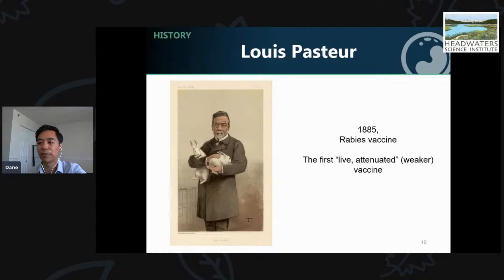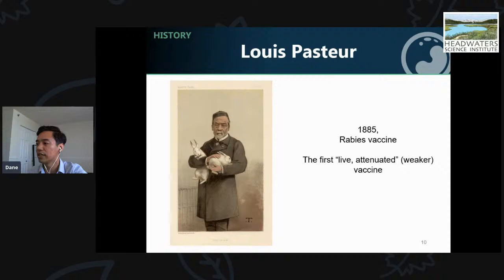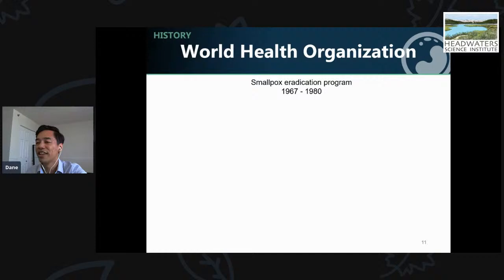In 1885, the second vaccine was created by Louis Pasteur against rabies — you might recognize his name from pasteurization of milk. He infected animals to weaken the virus, a 'live attenuated' approach. When nine-year-old Joseph Meister was brought to him after being bitten by a rabid animal, Pasteur was reluctant but ultimately administered the vaccine, and it saved Joseph's life. A live attenuated virus is weakened and can't make people sick — like if Jenner had given a weakened version of smallpox instead of cowpox.